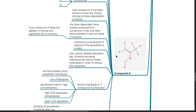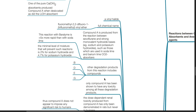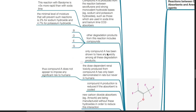Compound A is a vinyl halide. Its full chemical name is fluoromethyl-2,2-difluoro-1-(trifluoromethyl)vinyl ether. Compound A is produced from the reaction between sevoflurane and strong monovalent hydroxide bases such as sodium and potassium hydroxide, which may be present in soda lime and baralime. This reaction with baralime is 5 times more rapid than with soda lime. The minimum level of moisture that will prevent such reactions is 2% for sodium hydroxide and 4.7% for potassium hydroxide. Other degradation products include compounds B, D, E, and G; however, only compound A has been shown to have any toxicity. The dose-dependent renal toxicity produced from compound A has only been demonstrated in rats but never in humans, thus compound A does not appear to impose any significant risk to humans. Compound A production is reduced if the absorbent is cooled.